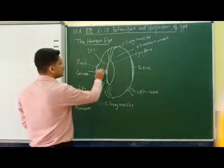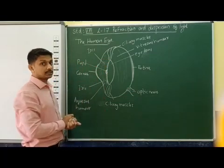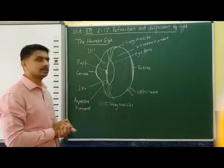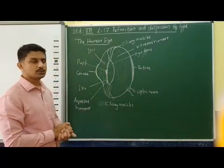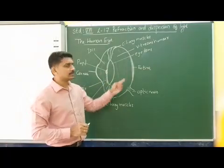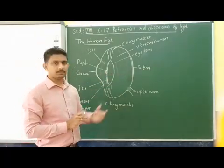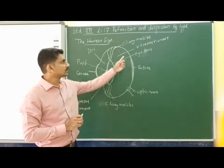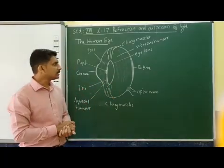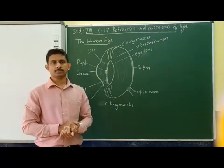And in between this lens and the cornea you can observe that there are two types of substance — one is known as aqueous humor. Similarly, in between this lens and the retina there is a certain jelly type of substance that is known as vitreous humor. So these are the various parts of a human eye.